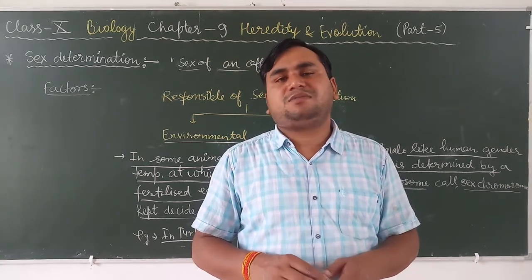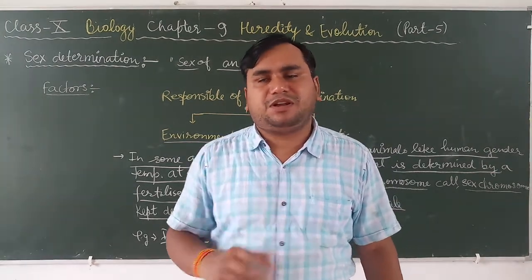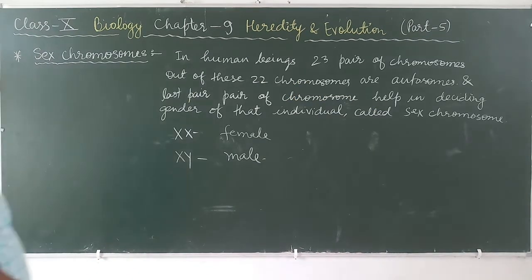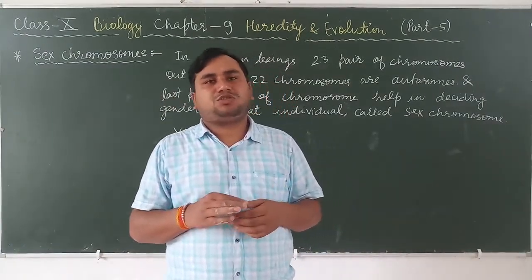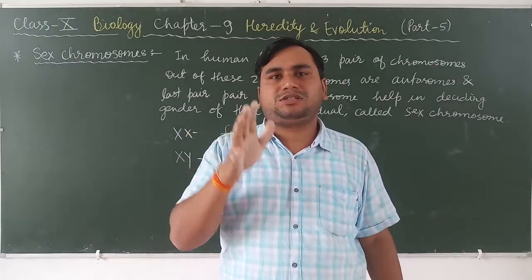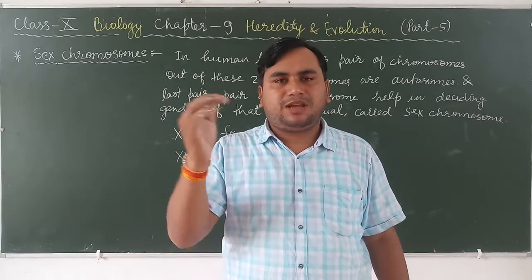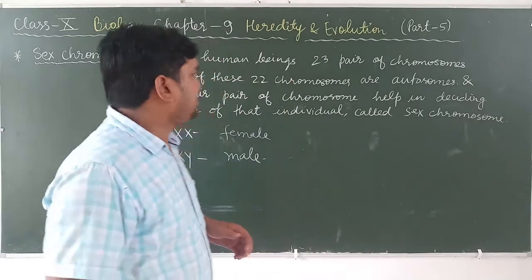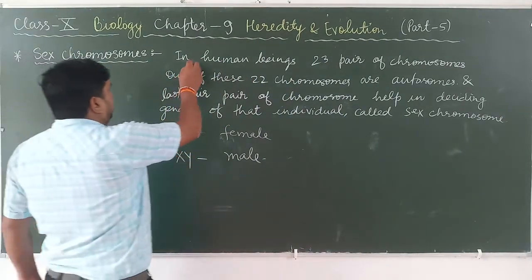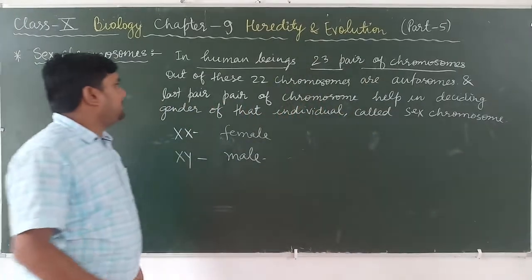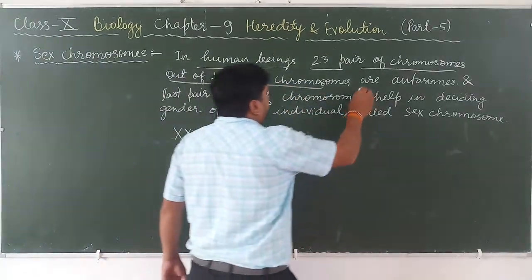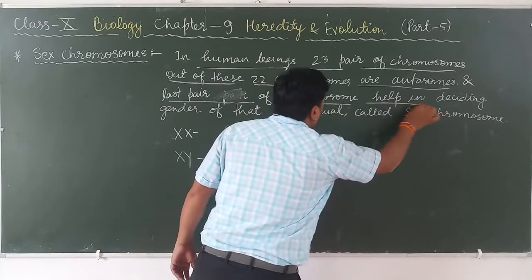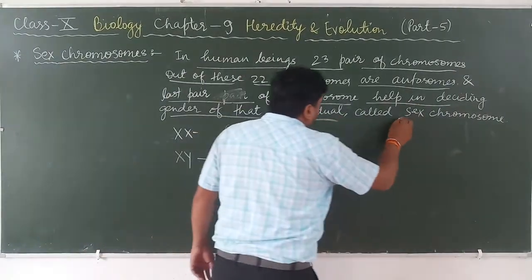Next is the sex chromosome. Sex chromosomes are responsible for the identification of the sex of the offspring, that is male and female. What is a sex chromosome? In human beings, 23 pairs of chromosomes are found. Out of these, 22 chromosomes are autosomes, and the last pair of chromosomes helps in deciding the gender of that individual. That last pair is called the sex chromosome.